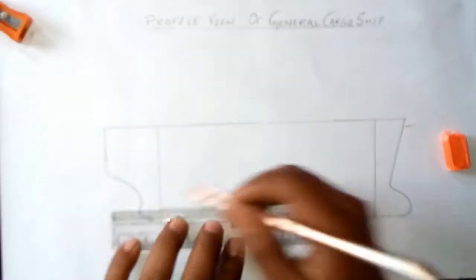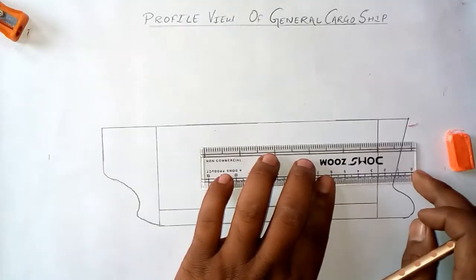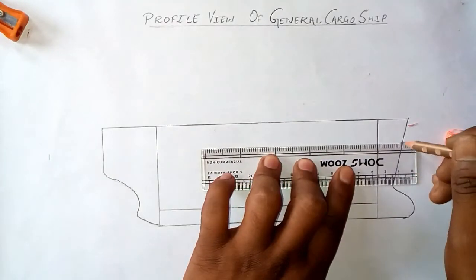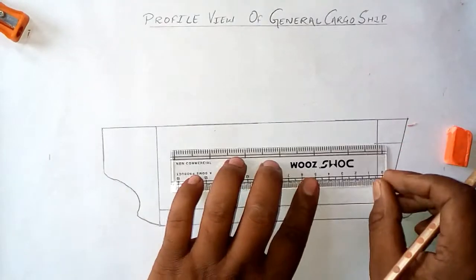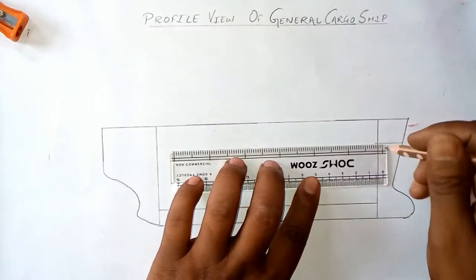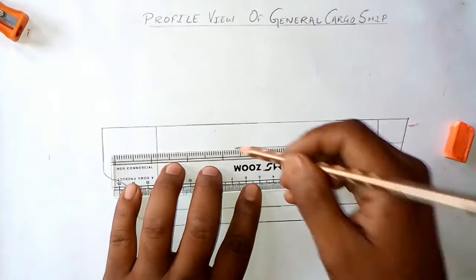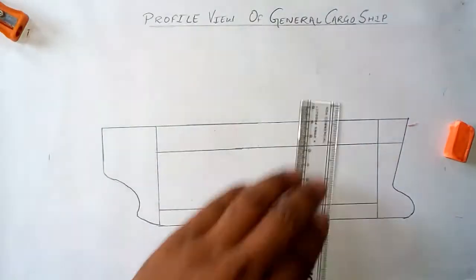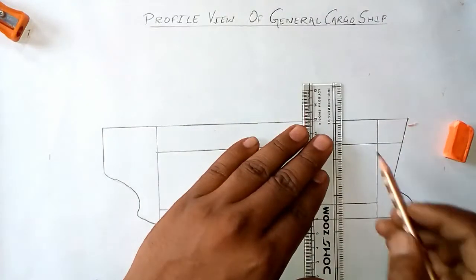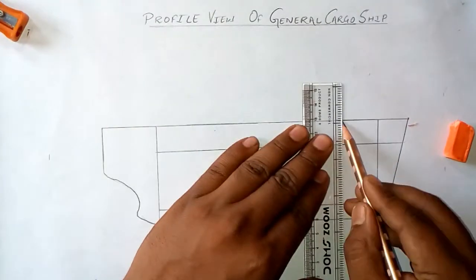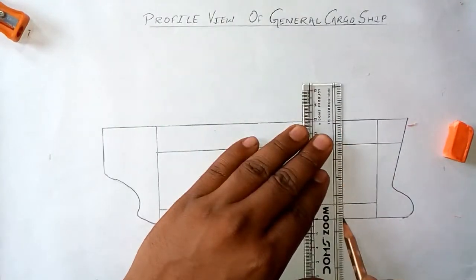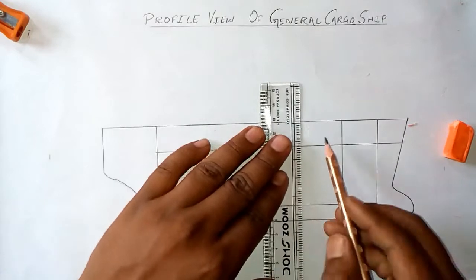Now I am drawing the tank top, the twin deck, and the bulkheads of the ship.